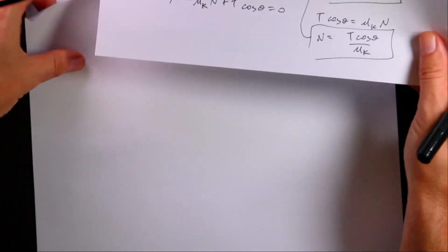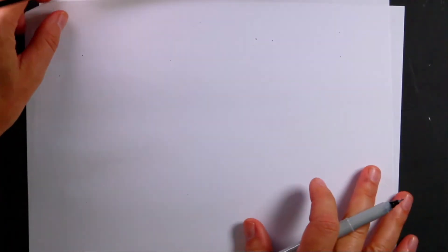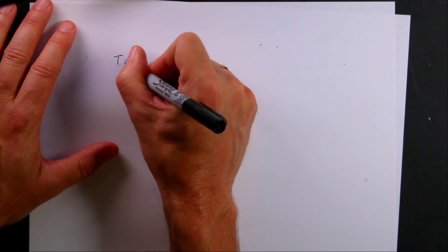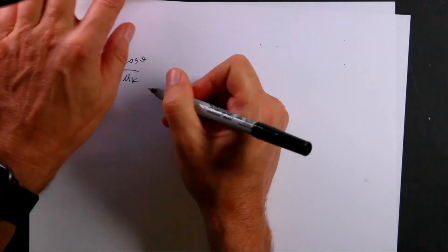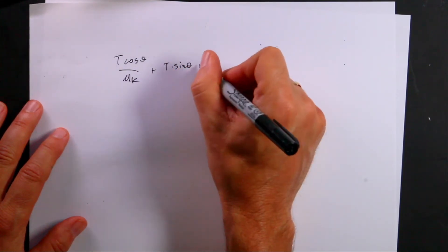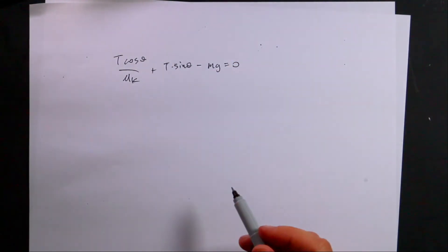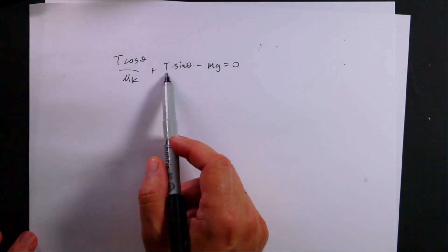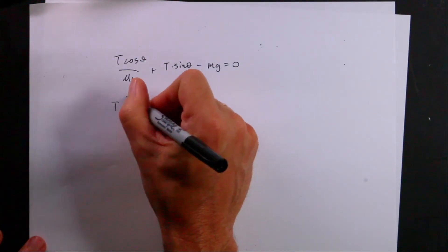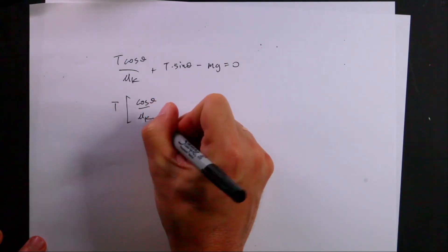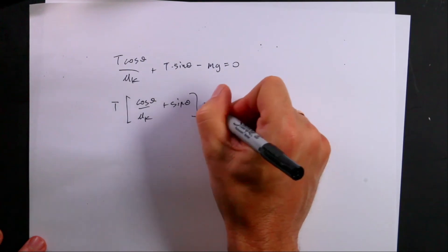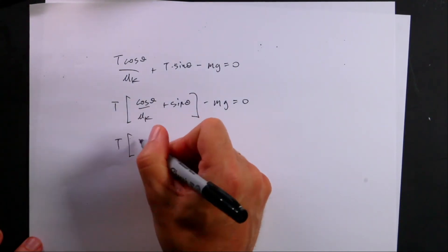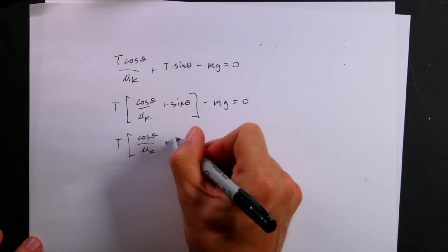So I get t cosine theta over mu k, that was my n, plus t sine theta minus mg equals zero. Now what I want to do here, I want to solve this for tension. So I have two terms with tension in it, so the best thing to do is to factor that out. So I'm going to factor this out so I get t times cosine theta over mu k plus sine theta minus mg equals zero.